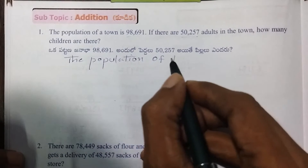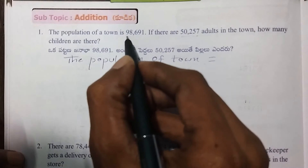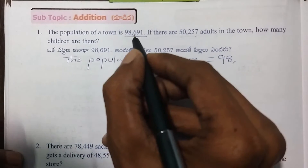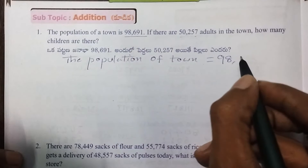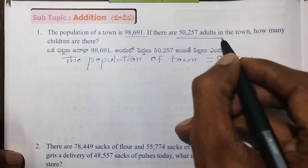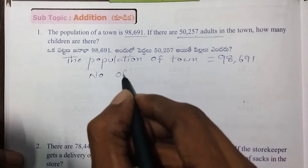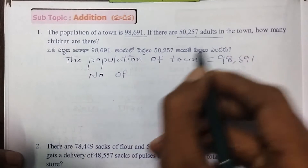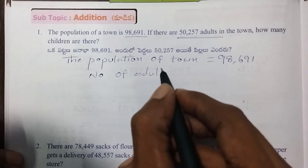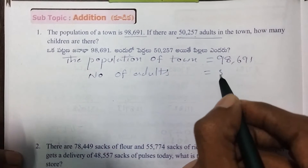The population of the town is 98,691. This is the number of adults, which is 50,257.